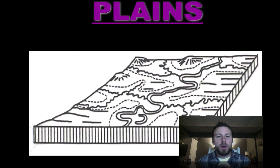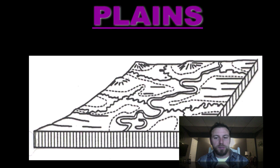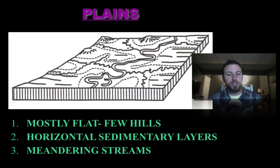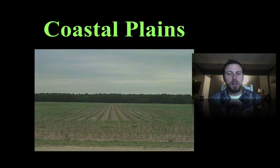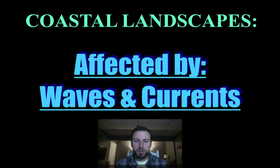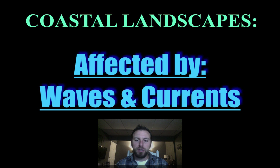Moving on to our plains — you can definitely see there's a big difference: mostly flat with few hills, subjected to a huge amount of weathering and erosion, horizontal sedimentary rock layers, and meandering streams, which are typically slower-moving. They move around obstacles such as the coastal plains on Long Island or out toward Florida and the Everglades. These coastal landscapes are affected by waves and currents, longshore drift or littoral current moving sediment up and down beaches, and storms that change energy and pull sediment away.